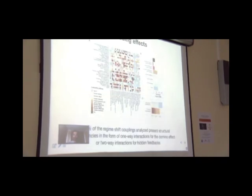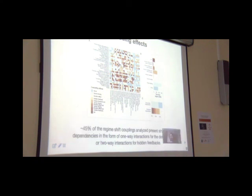So this is what we found. We have 30 regime shifts by 30 regime shifts from the database. That means there are 900 different combinations of regime shifts. We're not interested in the combination of the regime shift with itself, but of different regime shifts that leave us 870 different combinations. Of all those combinations, we found that there are structural dependencies in terms of domino effects, hidden feedbacks, or a combination of them here, shown by the colors of yellow orange and red, for 45% of all those couplings that we analyzed.